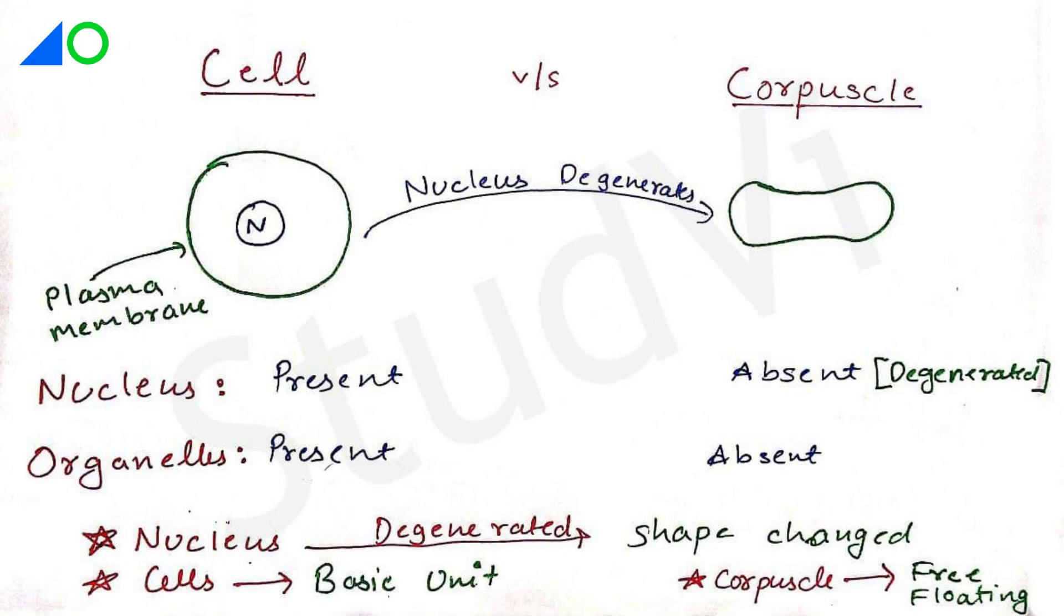The last difference is that cells are the basic unit, or more precisely, somatic cells exist with other cells, but in the case of a corpuscle, they are individually free-floating in blood and lymph.